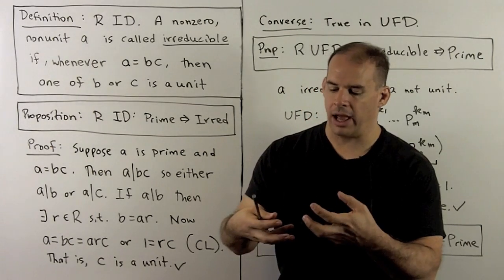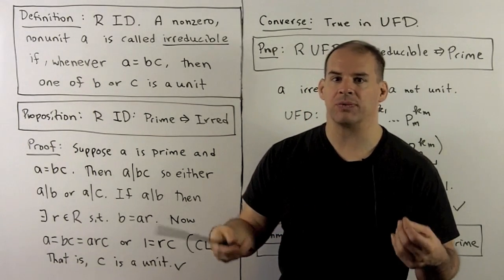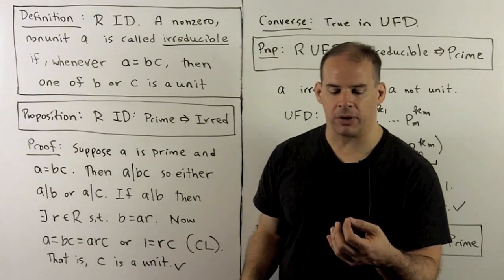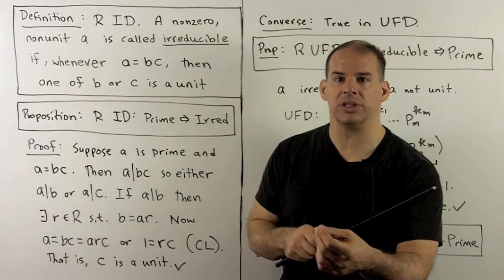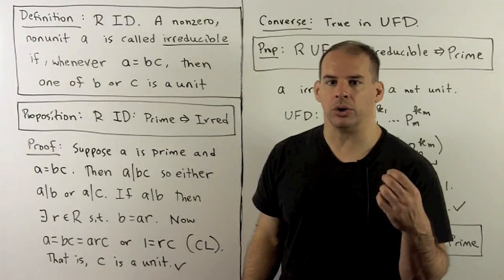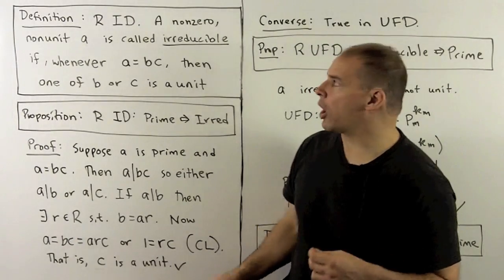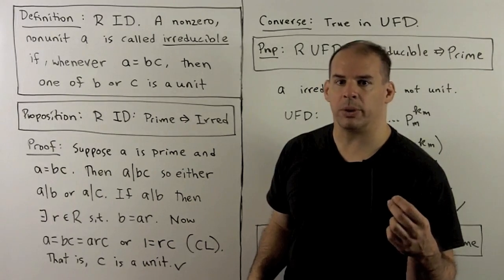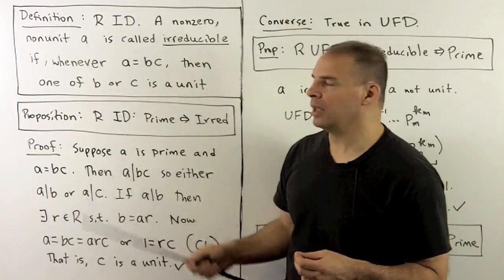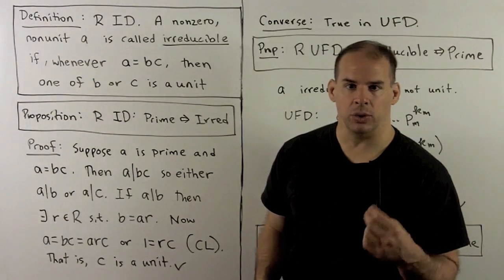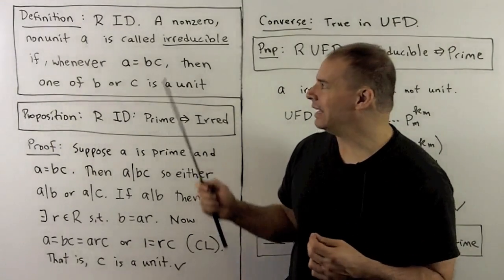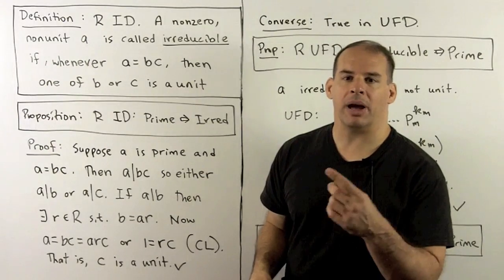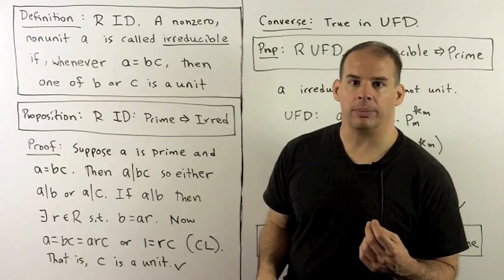When factoring, we take elements in our ring and try to break them down as far as we can. If an element can't be broken down any further — meaning we can only split off units — we call that element irreducible. So if R is an integral domain, a non-zero, non-unit a is called irreducible if whenever a = bc, then one of b or c is a unit. In the integers, irreducibles and primes are the same, but this need not be the case in general; we're looking for conditions when prime and irreducible imply one another.